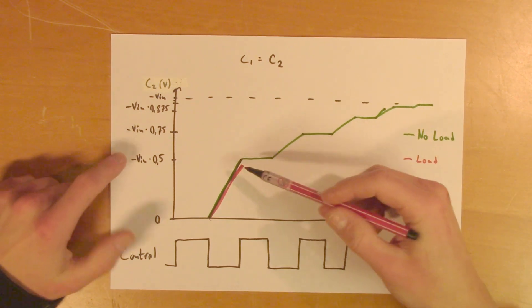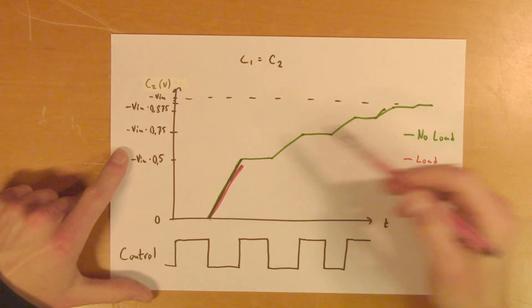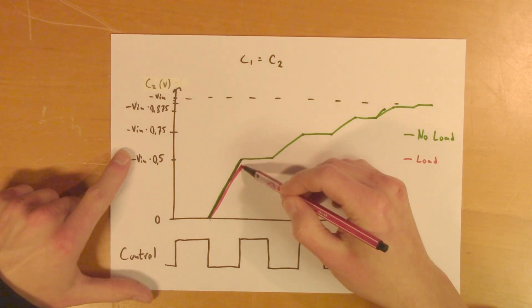And then, in the part where C1 charges up, there will still be some current draw from C2. So the charge will slightly decrease here.